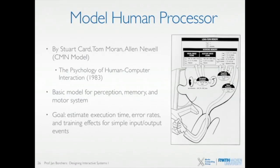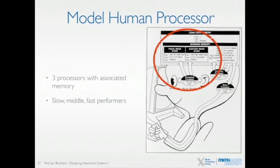The goal of this model is to estimate the execution times for a certain task, how often I make mistakes, and how long it takes to pick up a new skill or a new task. The basic underlying model is that you have three different processors in your head: a perceptual processor, a cognitive processor, and a motor processor. We'll take a look at each of them in turn in this class.